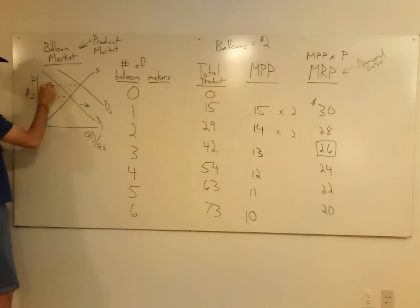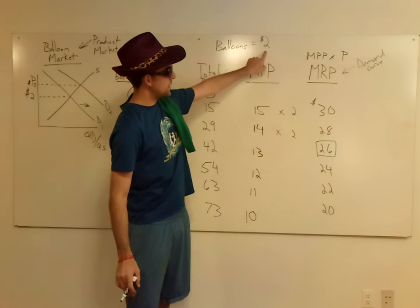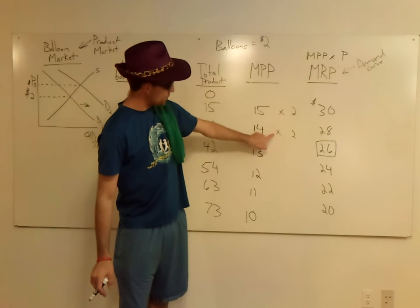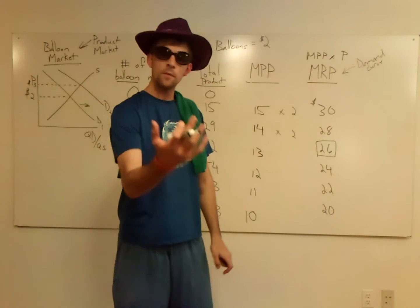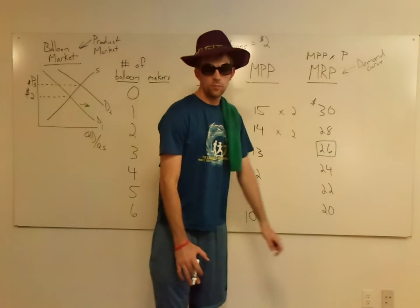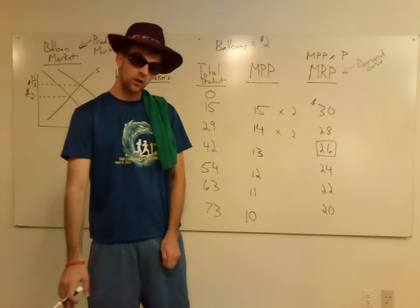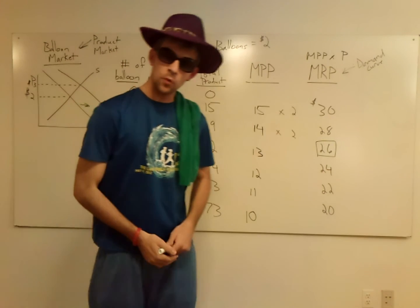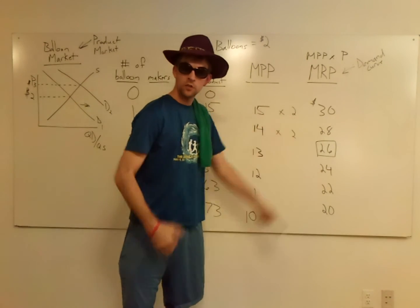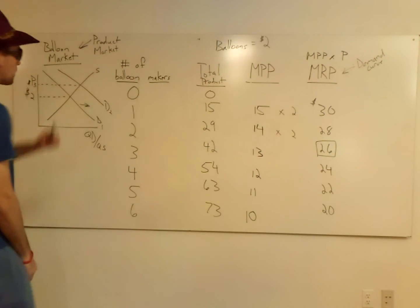Notice what happens to your price now. Let's say it's $3. So instead of multiplying by two, each one of these has gone up in value, so your marginal revenue product has increased as well. Which means what's going to happen to your decision to hire? You're probably going to hire more people because their value has increased because of the price of the product increasing.